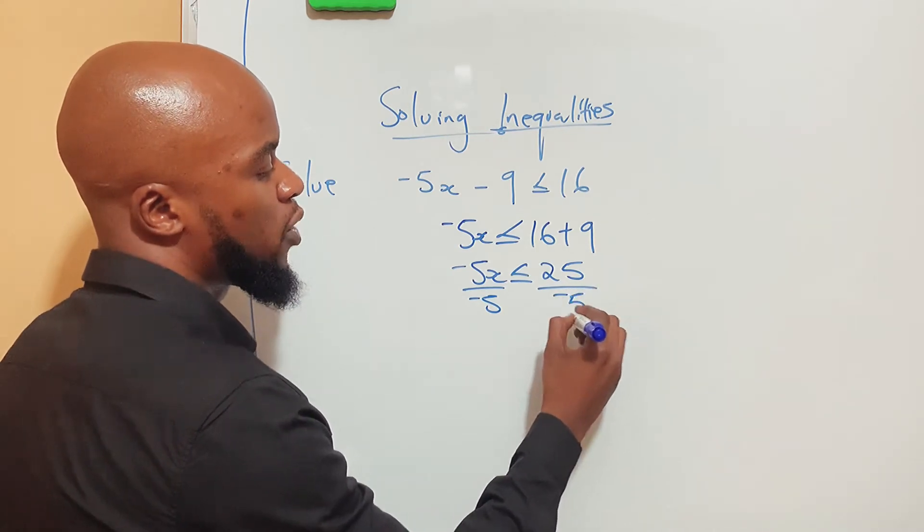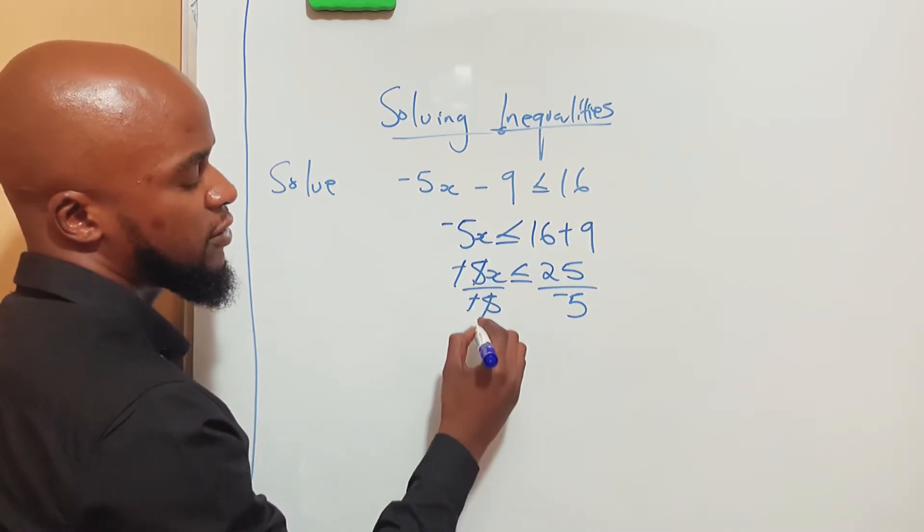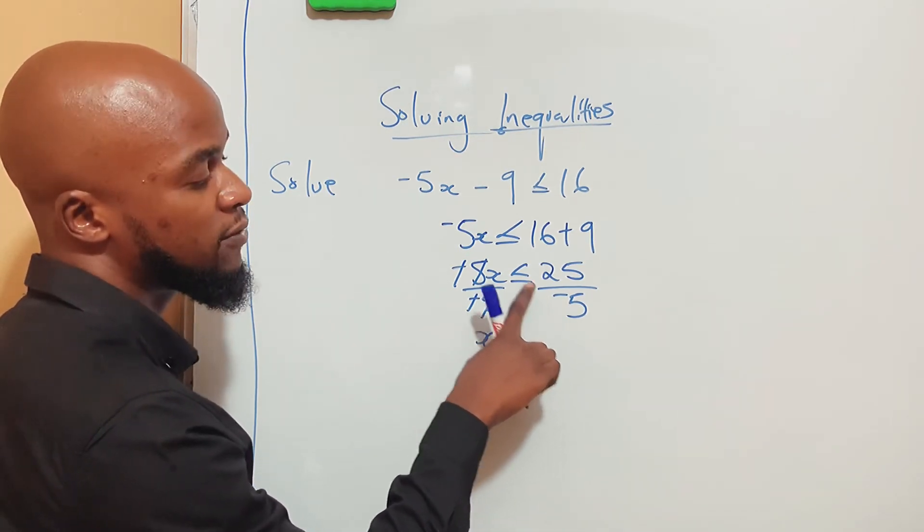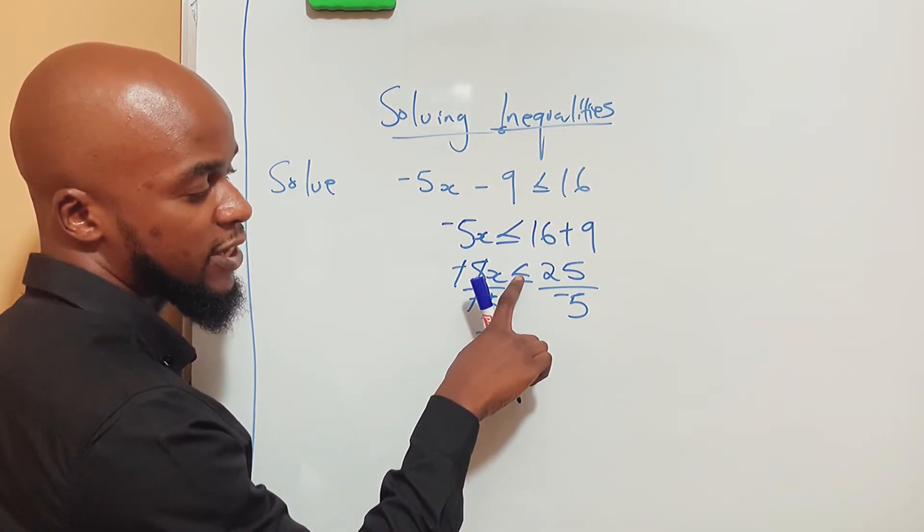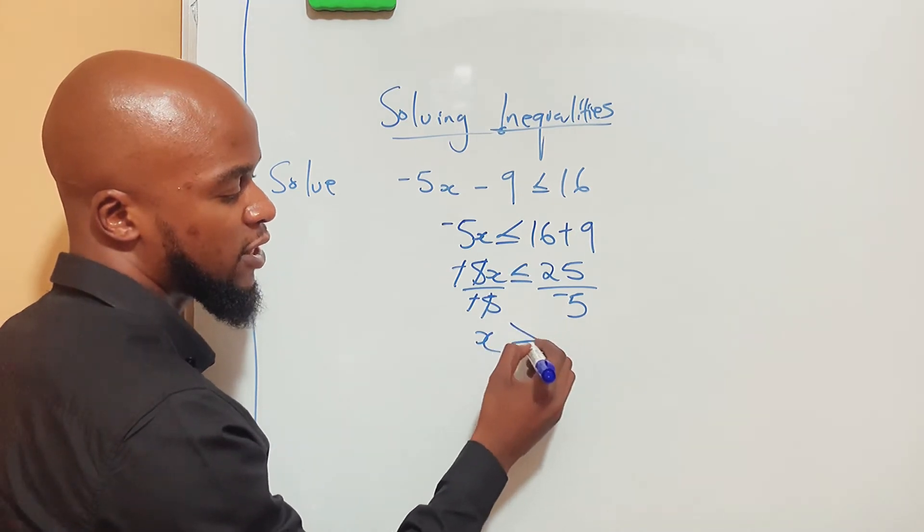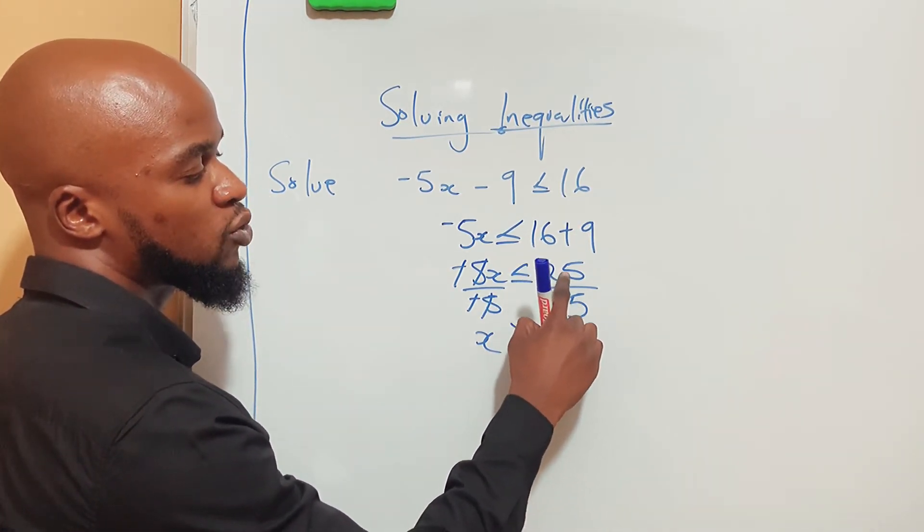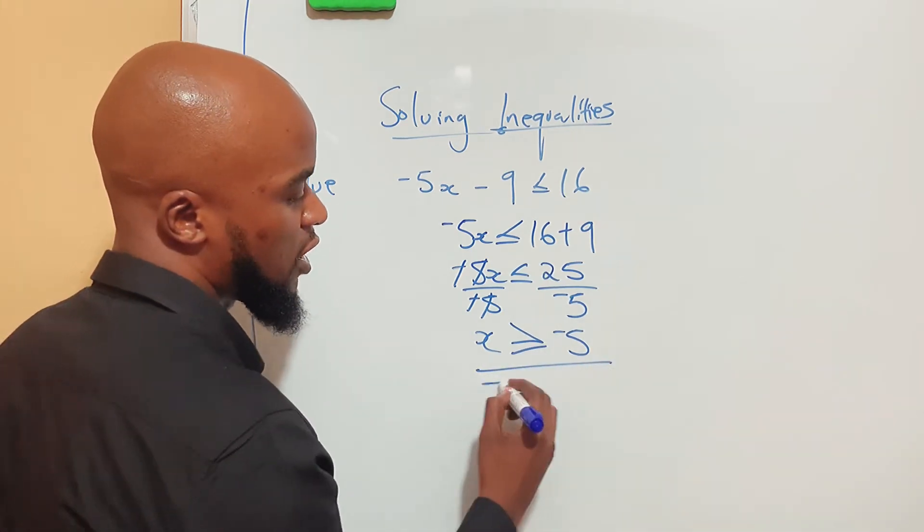Mind you, whenever you divide by a negative, the inequality sign changes. So less than or equal to becomes greater than or equal to. Dividing 25 by -5 gives -5, so x ≥ -5. This is how you solve this.